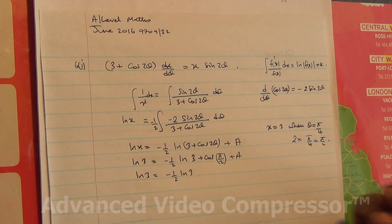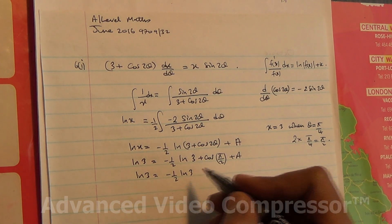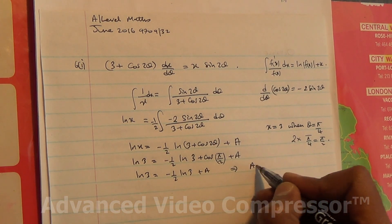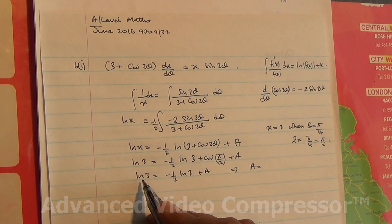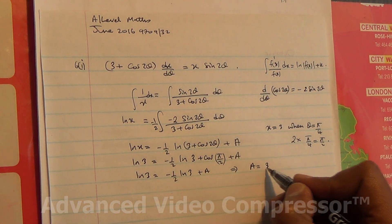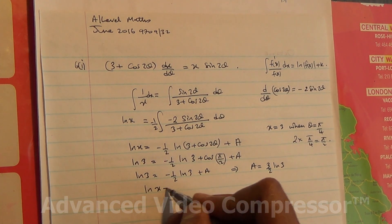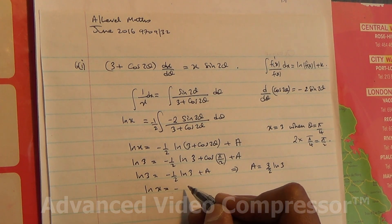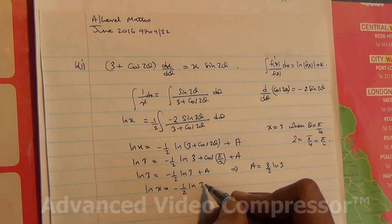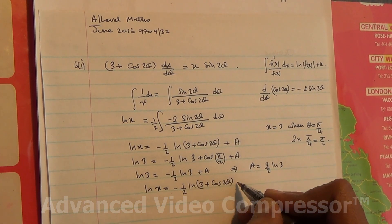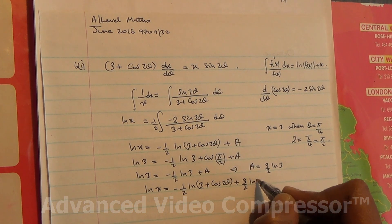cos(π/2) is 0 — that's 90 degrees, check it in your calculator and you'll get 0. Therefore, ln3 = −(1/2)·ln3 + a. Sending the −(1/2)·ln3 to the other side, a = ln3 + (1/2)·ln3 = (3/2)·ln3. So ln x = −(1/2)·ln(3 + cos2θ) + (3/2)·ln3.